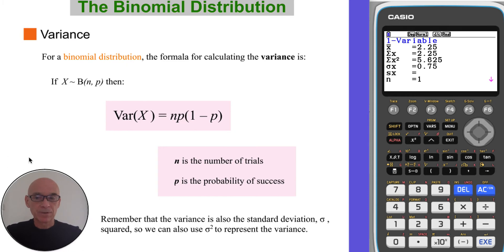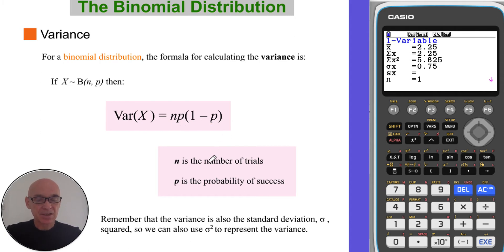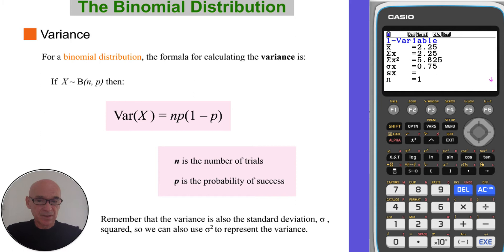The formula for calculating the variance for a binomial distribution — Var(X) — is found by multiplying n by p by 1 minus p. So again, n is the number of trials and p is the probability of success. Remember also that the variance is the standard deviation squared, so once we have the variance, we can then calculate the standard deviation.